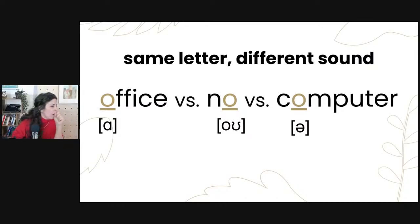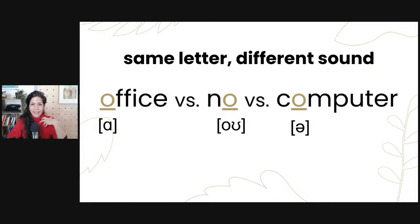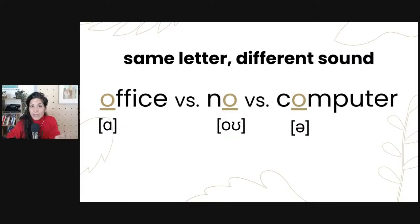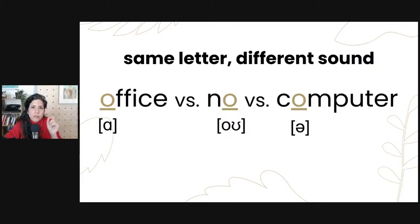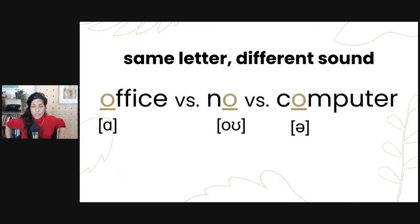The last word has the symbol of the schwa. The schwa is a reduced vowel. Last time we talked about the schwa and the reduced vowel sound — that's what happens in unstressed syllables in words. In this case, 'computer' — com-puter. The O in the unstressed syllable becomes a schwa sound. So three different pronunciations for the same letter O: ah, oh, and uh.